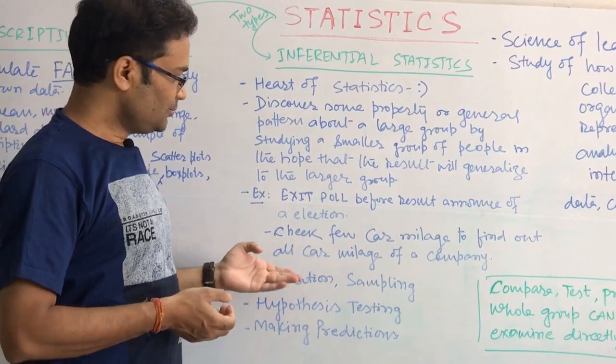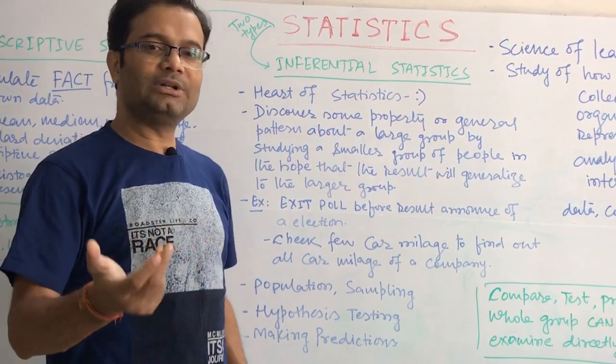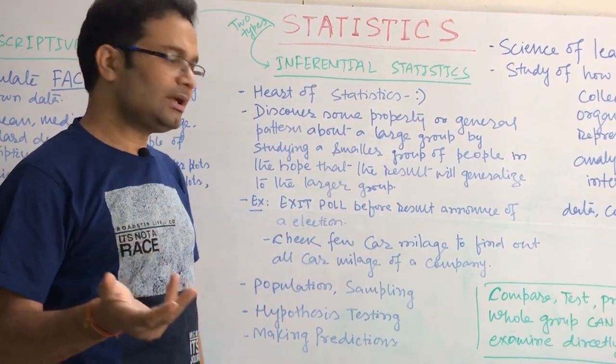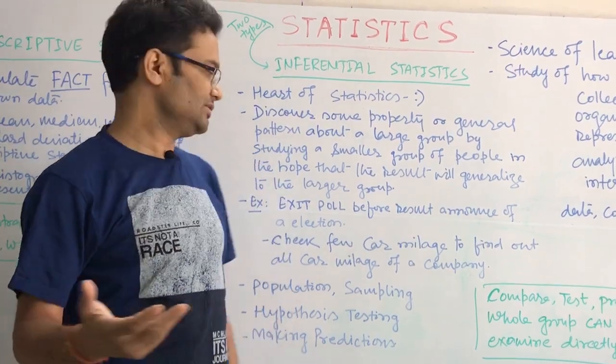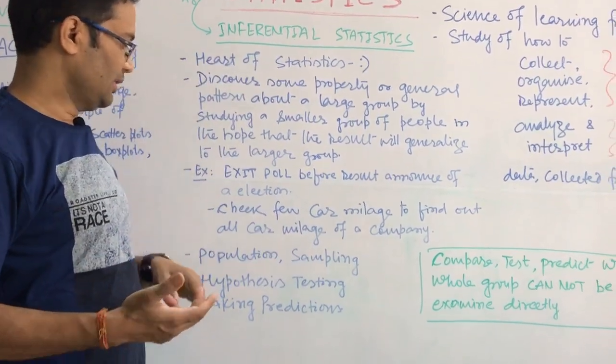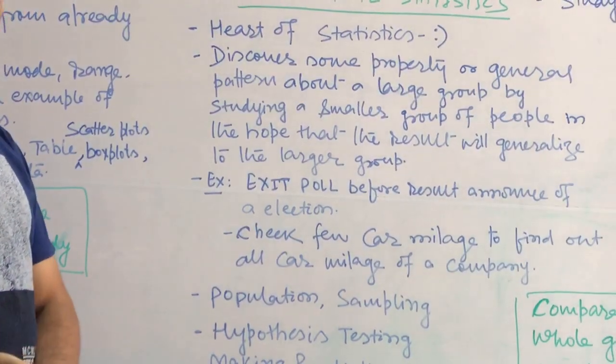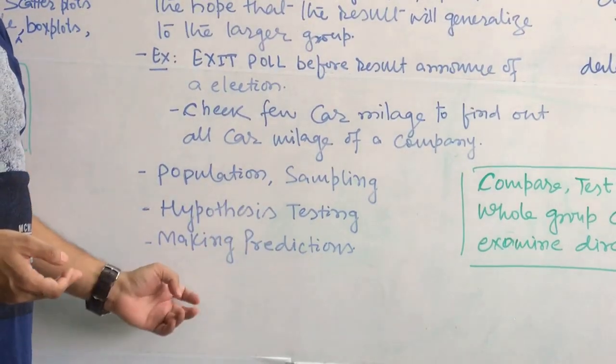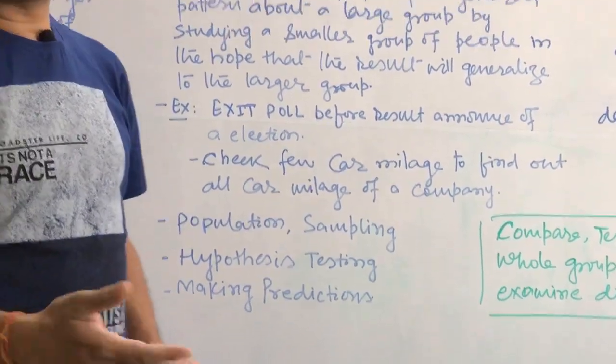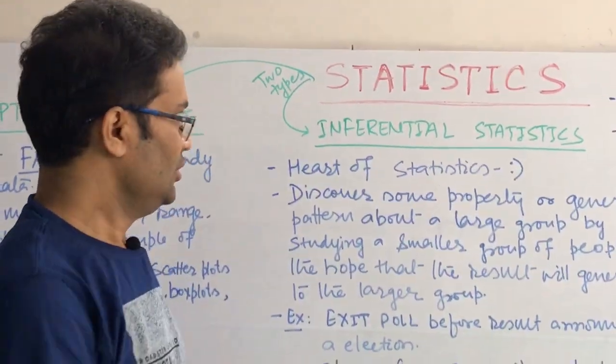And again, the second example. Suppose if you want to find out what is the mileage of the car produced by a big company every year. We can't test all the cars for their mileage. We will use this technique to find out. Some terminologies are there in inferential statistics: population, sampling, hypothesis testing, making prediction. In down the line when I create new videos, I will be going to explain.